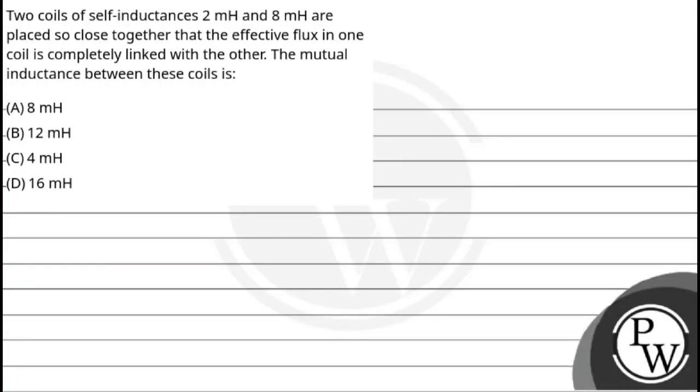Let's see this question. Two coils of self-inductances 2 millihenries and 8 millihenries are placed so close together that the effective flux in one coil is completely linked with the other. The mutual inductance between these coils is: (A) 8 mH, (B) 12 mH, (C) 4 mH, and (D) 16 mH.